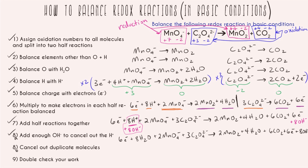Step 8b: cancel out duplicate molecules. The electrons always cancel — that's the whole point. Looking around, I can see waters on both sides: I can completely cancel four waters, changing the eight on one side to a four. Scanning the rest of the molecule I don't see anything else to cancel, so I redraw and this is my final balanced equation.